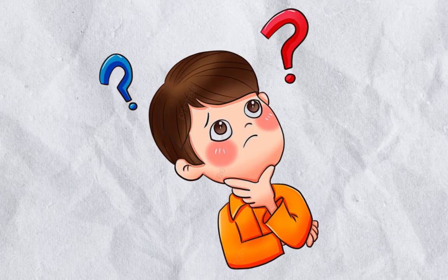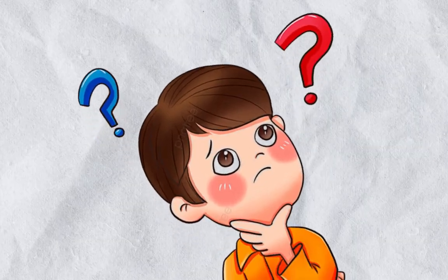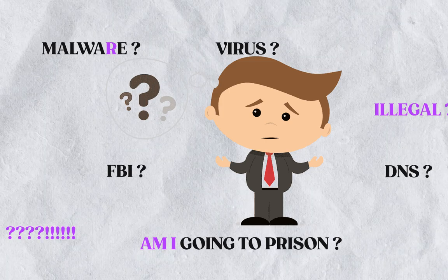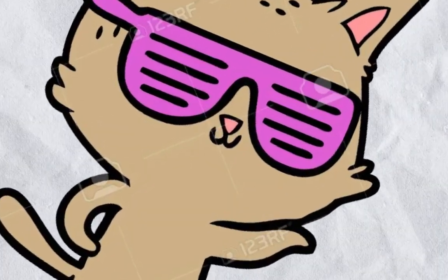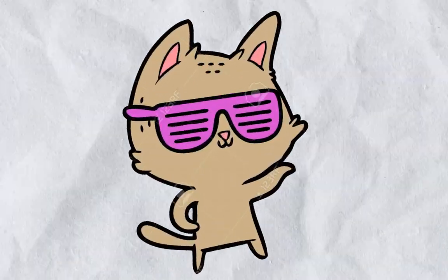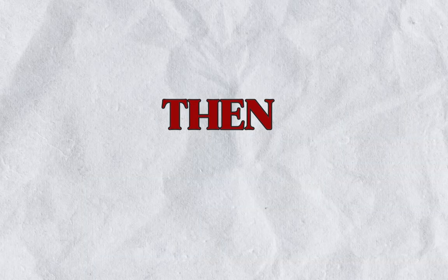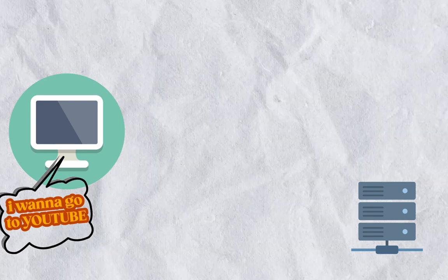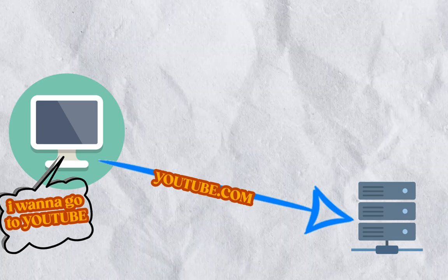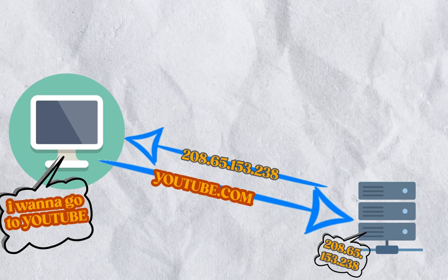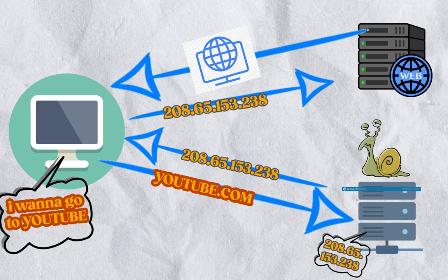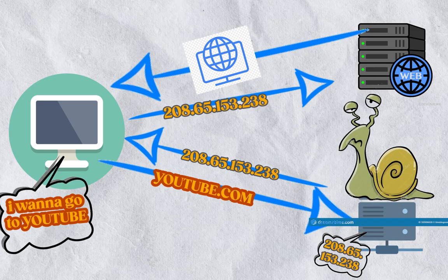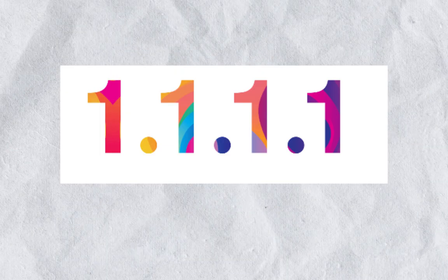Some of you may want to know what the 1.1.1.1 DNS server is and what you just did to your internet. A DNS server translates searches that we humans understand into IP addresses, controlling which server the user reaches when they type a domain name into their browser. Using a slow DNS server can significantly slow down everything you do online.